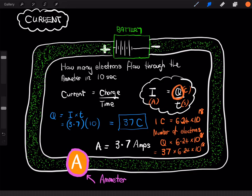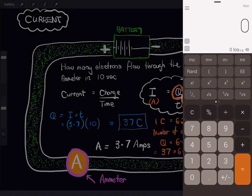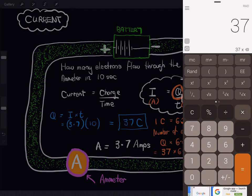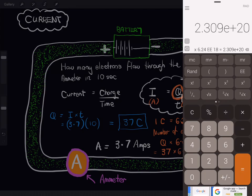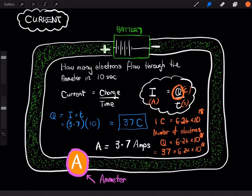And, if we work that out, we get an answer of 2.309, which will round up to 2.31 times 10 to the power of 20. So, I'll just write the answer at the top here. 2.31 times 10 to the power of 20 electrons flowed through that ammeter in that 10 second time period.